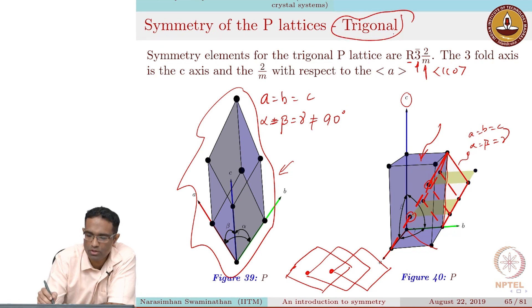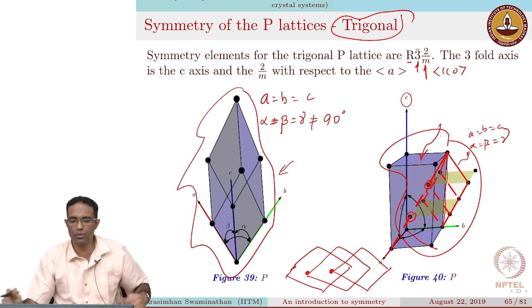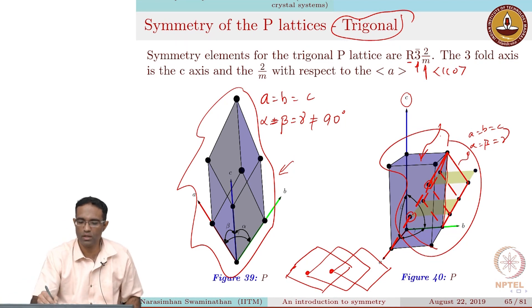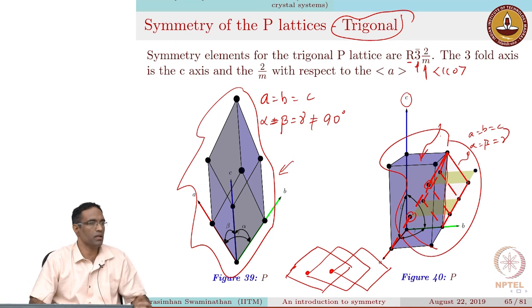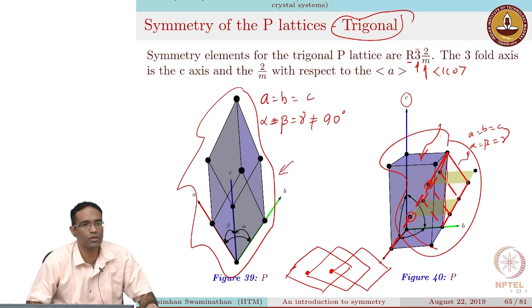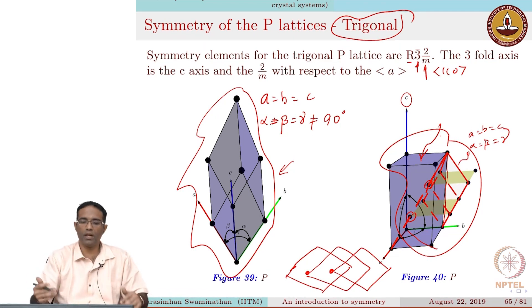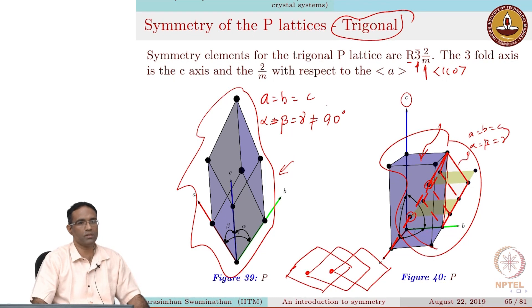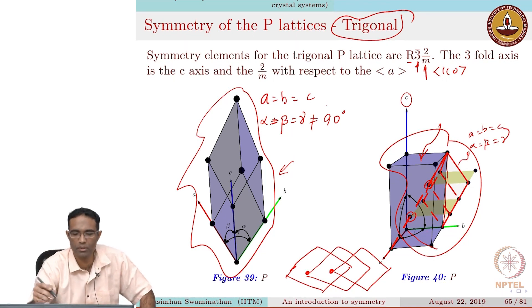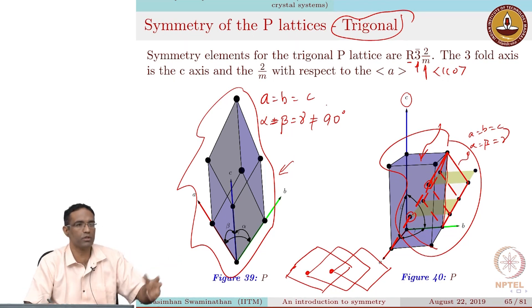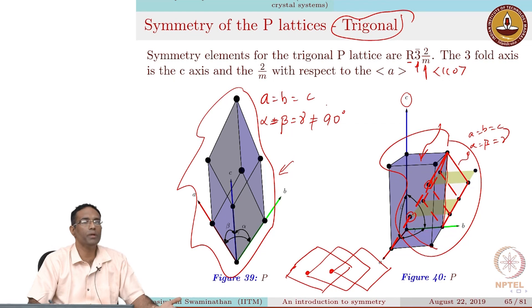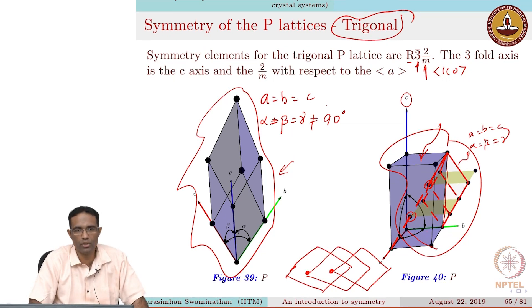For trigonal structures, we generally use the hexagonal unit cell in order to construct them — this is something you might want to remember. So even when the other unit cell dimensions are given, it is possible for us to find out what the dimensions of the hexagonal unit cell would be through geometry.